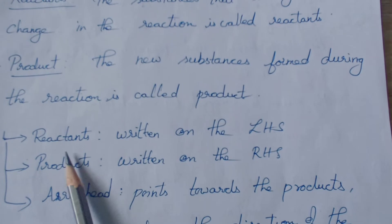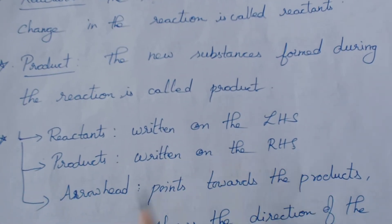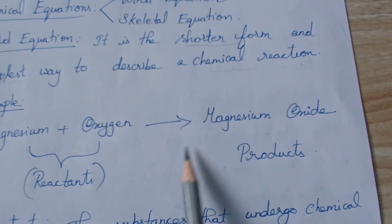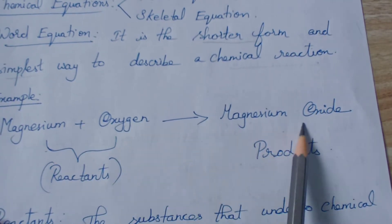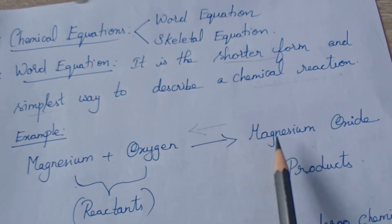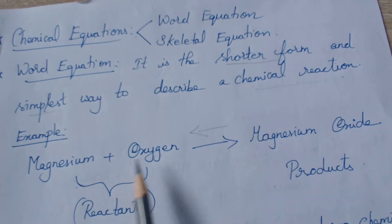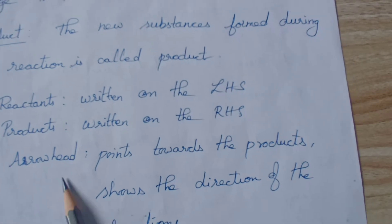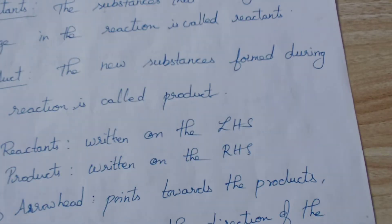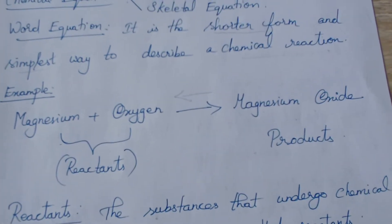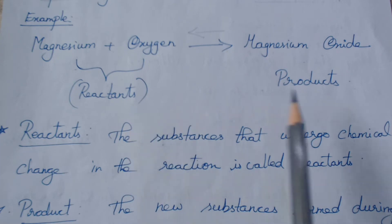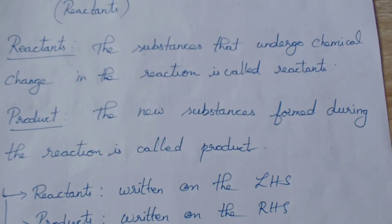Reactants are always written on the left-hand side, and the product is written on the right-hand side. The arrow shows that the reaction takes place in that direction — magnesium plus oxygen gives magnesium oxide. The arrow pointing towards the product shows the direction of the reaction. So the left-hand side is reactants, right-hand side is product.